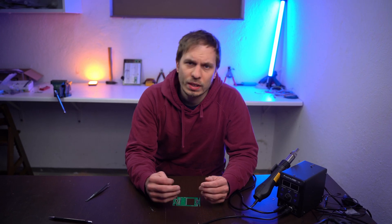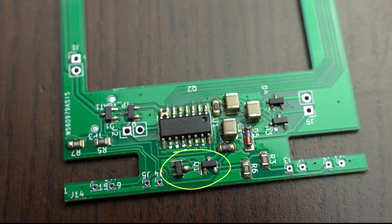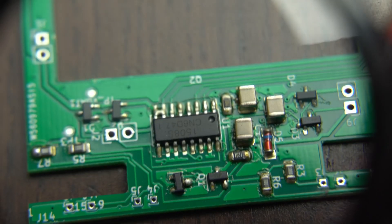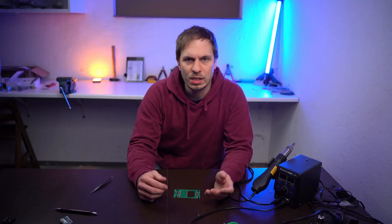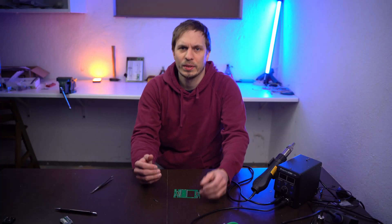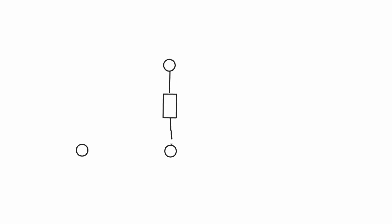To understand transistors in general we will start with an experiment. I will show you both and you tell me where they are different and where they are equal. Okay, to be serious, there is no visible difference, but you can see what they have in common: they both have three pins. What you can't see is the principle of how they work. Between two pins is a variable resistor and the third pin controls this resistance. So far so easy, and true for both.